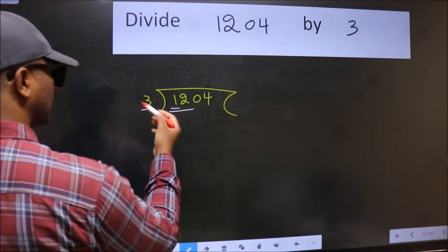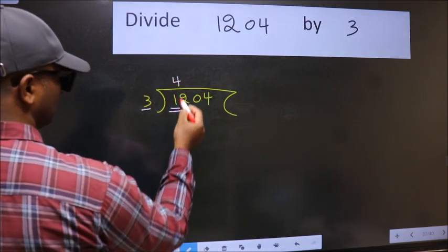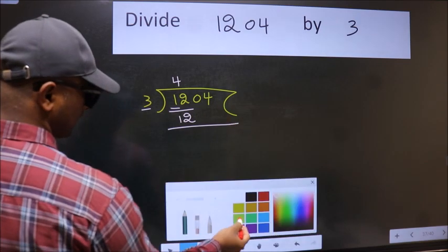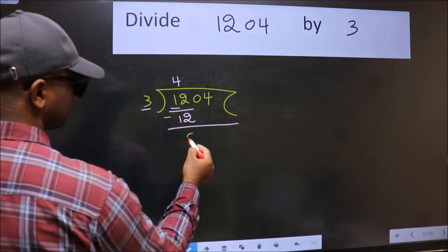When do we get 12 in the 3 table? 3 times 4 is 12. Now we should subtract. We get 0.